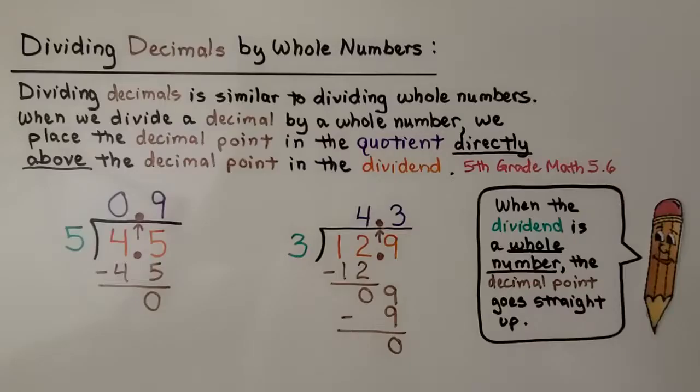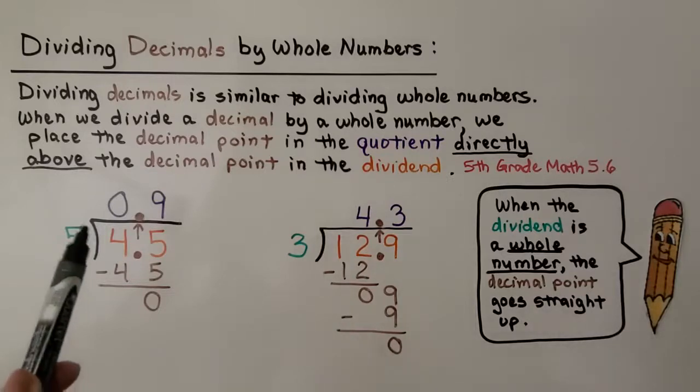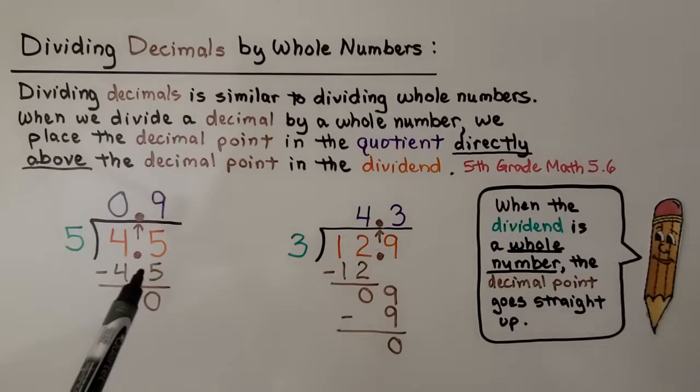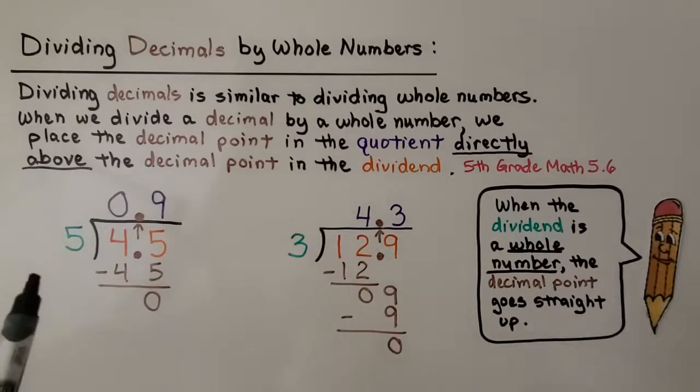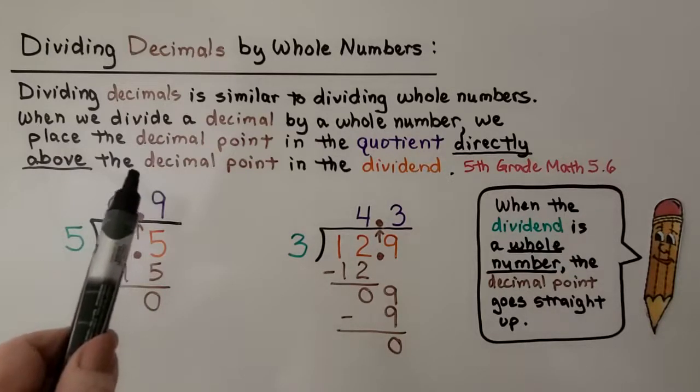This is how we divide decimals by whole numbers. Dividing decimals is similar to dividing whole numbers. When we divide a decimal by a whole number, we place the decimal point in the quotient directly above the decimal point in the dividend. We also learned this in 5th grade math and there will be a link. When the dividend is a whole number, the decimal point just goes straight up.